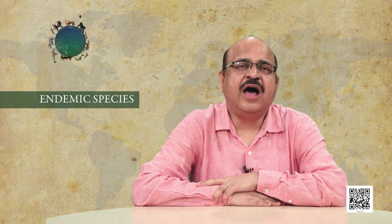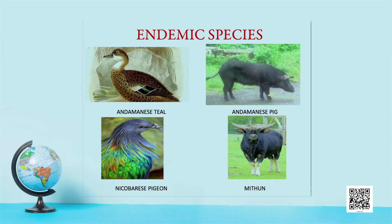Endemic species are those which are found only in some particular areas, usually isolated by natural or geographical barriers. Examples include the Andaman teal, Nicobar pigeon, Andaman wild pig, and mithun in Arunachal Pradesh.